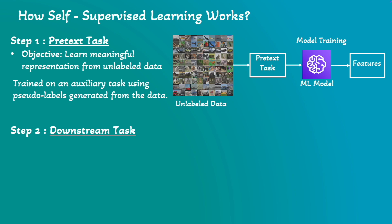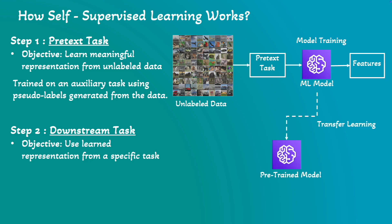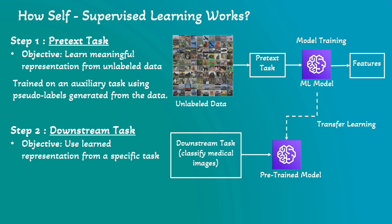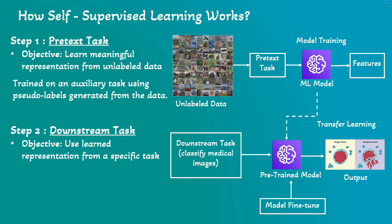Step two of the process is the downstream task. The objective here is to use the learned representations from the previous step for a specific task. Take the pre-trained model from the pretext task and fine-tune it on a small labeled dataset for a specific task. For healthcare, you can classify images for tumor detection. For genomics, you can predict gene functions or disease risk. For natural language processing, you can analyze sentiment or perform text classification. With the pre-trained model and downstream task, it can predict the output — for example, categorizing a tumor as benign or malignant. At the final step, we can fine-tune the model and adjust its parameters to adapt to any new task.